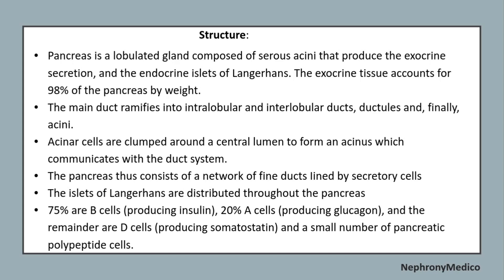Regarding structure: the pancreas is a lobular gland. It consists of serous acini which produce acinar secretion, and the endocrine islets of Langerhans. The main duct ramifies into interlobular and intralobular ductules and finally acini. Acinar cells are clumped around a central lumen to form an acinus which communicates with the duct system. The islets of Langerhans are distributed throughout the pancreas: 75% are B cells which produce insulin, 20% are A cells which produce glucagon, and the remainder are D cells producing somatostatin and a small amount of pancreatic polypeptide cells.